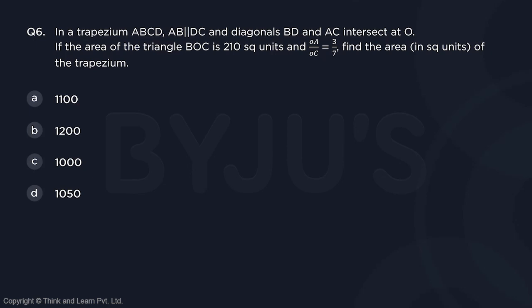In a trapezium ABCD, AB is parallel to DC and diagonals BD and AC intersect at O. If the area of the triangle BOC is 210 square units and OA by OC is 3 by 7, find the area of the trapezium.